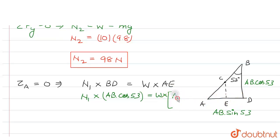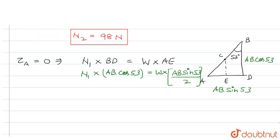Now we will get N1 times AB can be cancelled on both sides, so we will have cos 53 here,